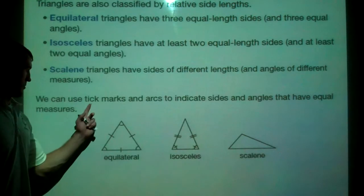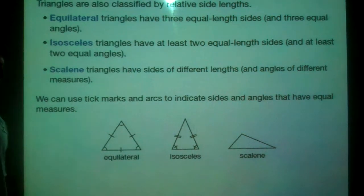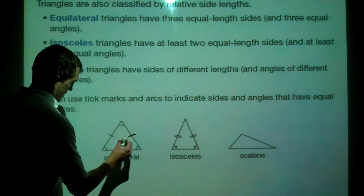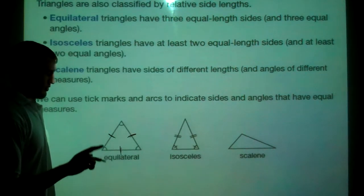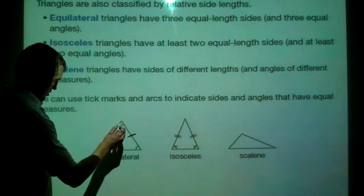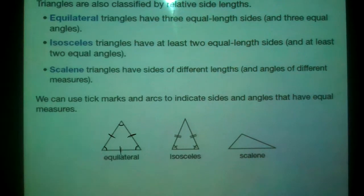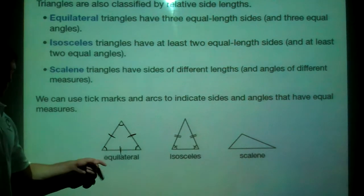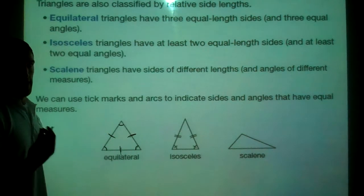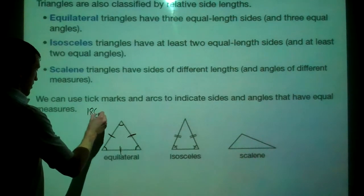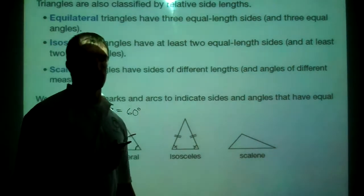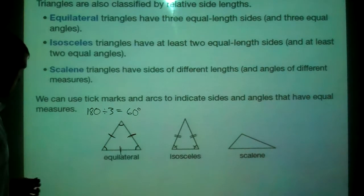We use tick marks and arcs to indicate the sides and angles that are equal measures. In an equilateral triangle, all the sides are the same, so anything with a single mark is equal, and all the angles are the same. In an equilateral triangle, the angles are always 60 degrees because there are three equal angles that add up to 180 degrees — 180 divided by 3 equals 60. So equilateral triangles always have 60 degree angles and equal sides.